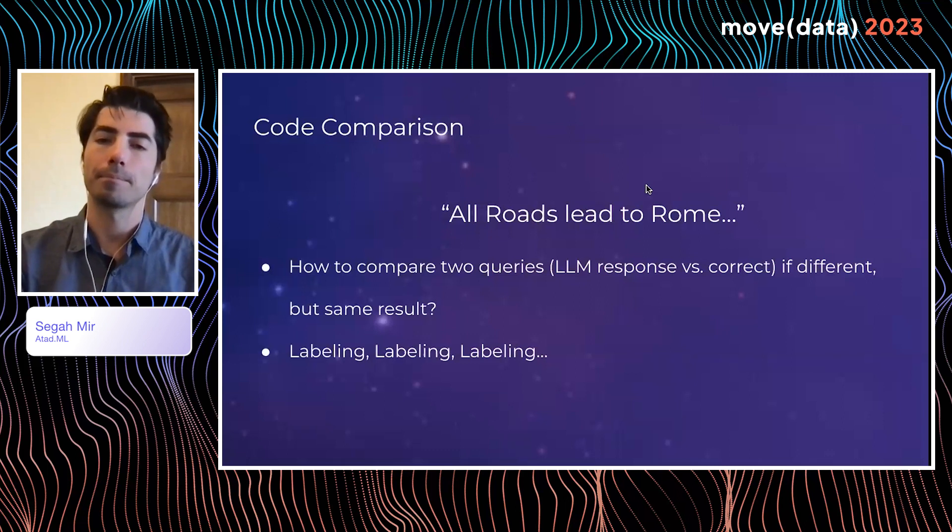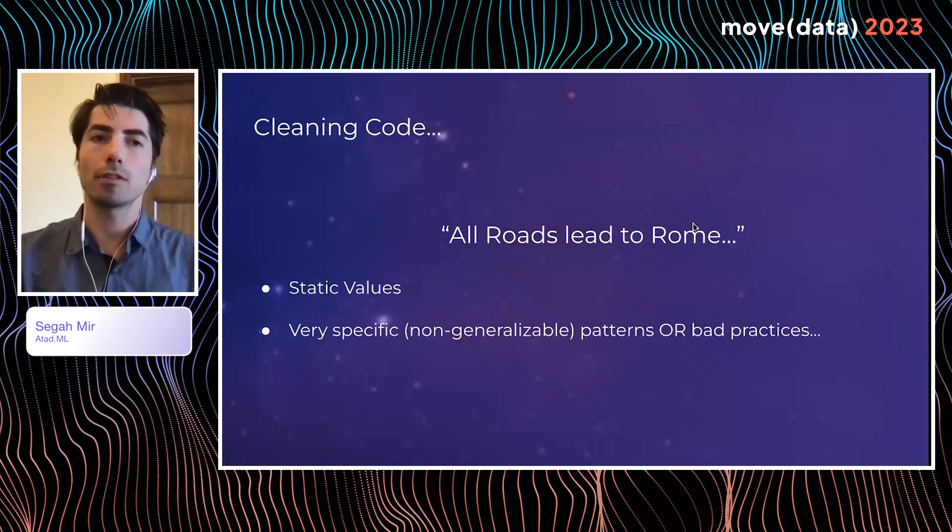Third is how do we actually compare different blocks of code? So if an untrained eye looks at two different blocks of code and they're not the same, it doesn't mean that they're not going to produce different results. It's actually very likely that they might produce the same result. So there's not really like this simple solution to this. One thing that we constantly rely on is just labeling. And we're still trying to figure out how to do this better.